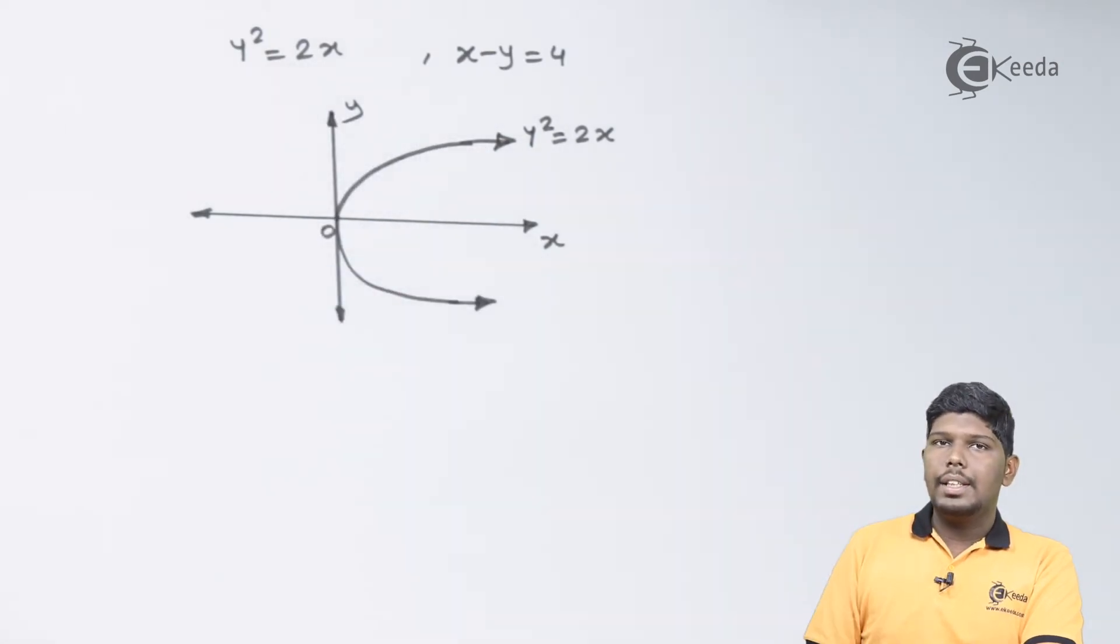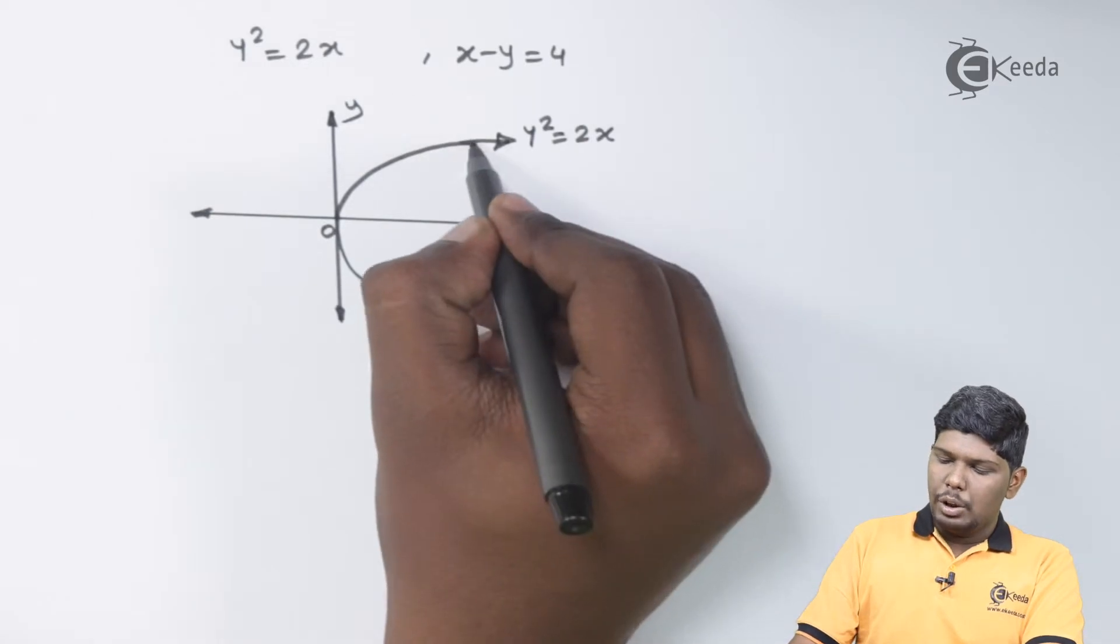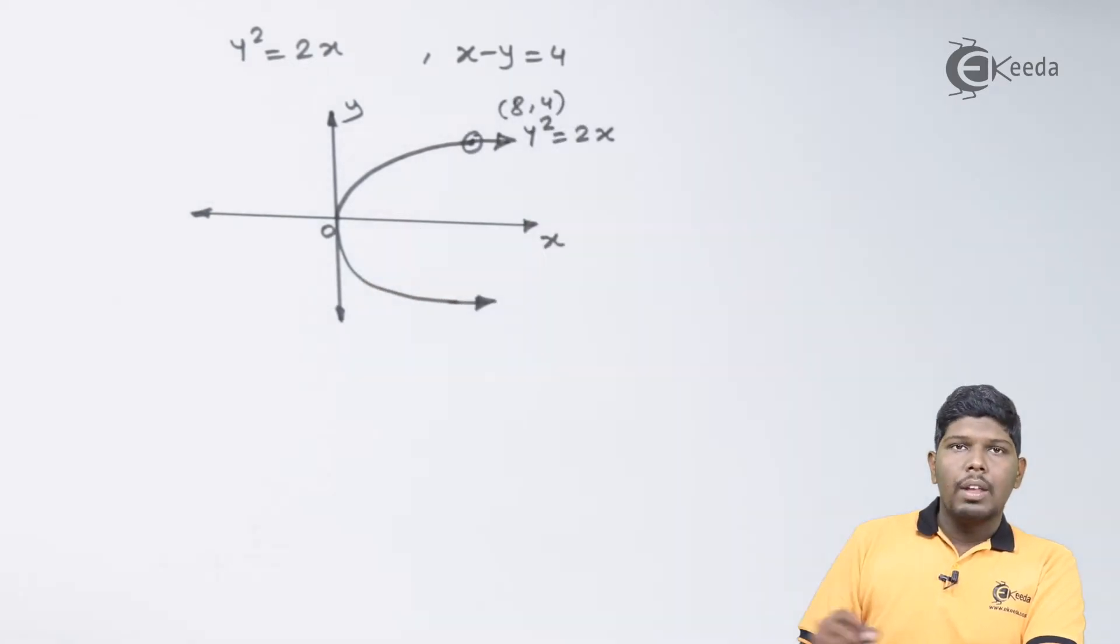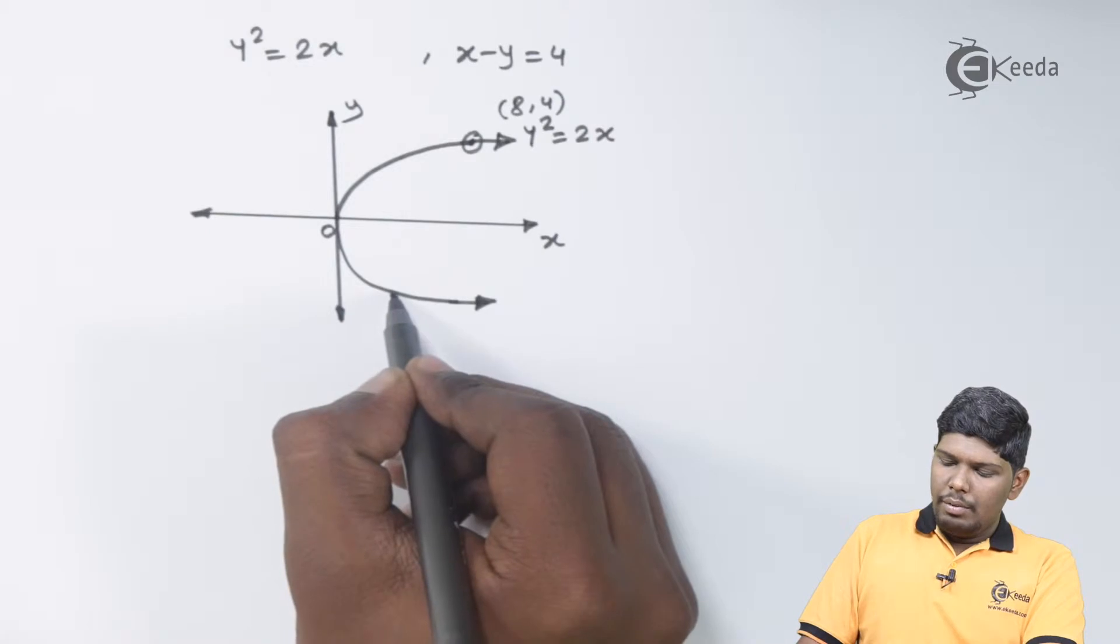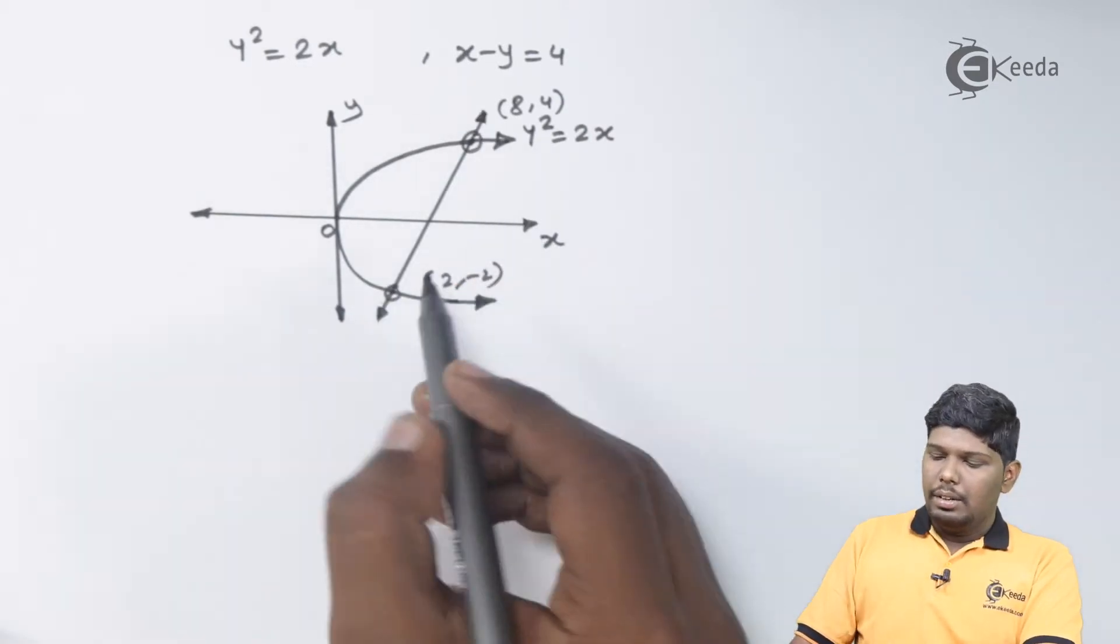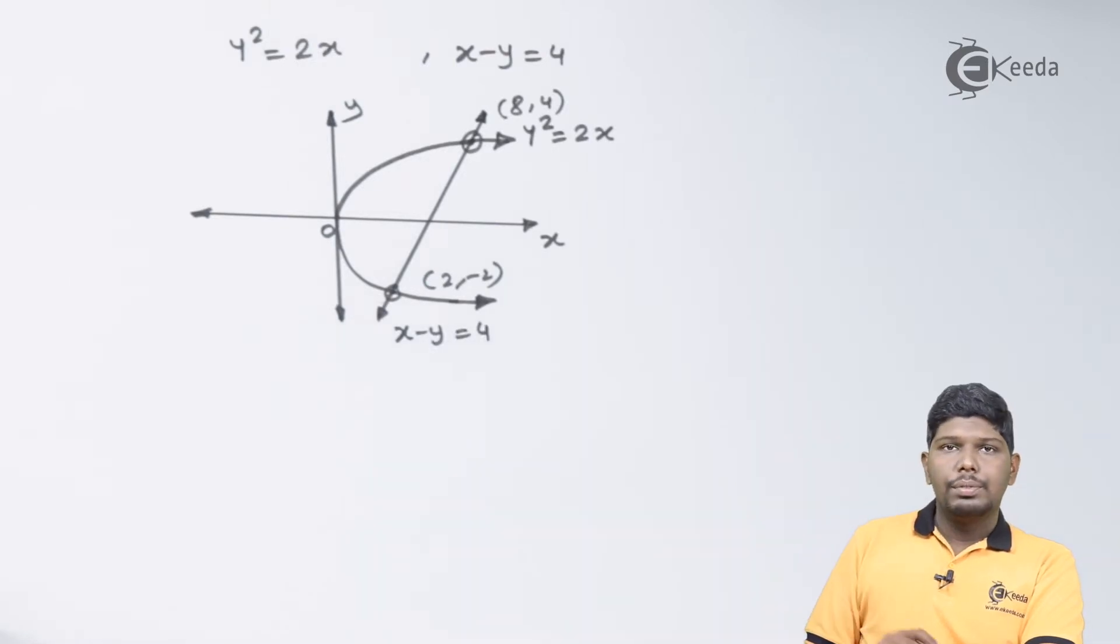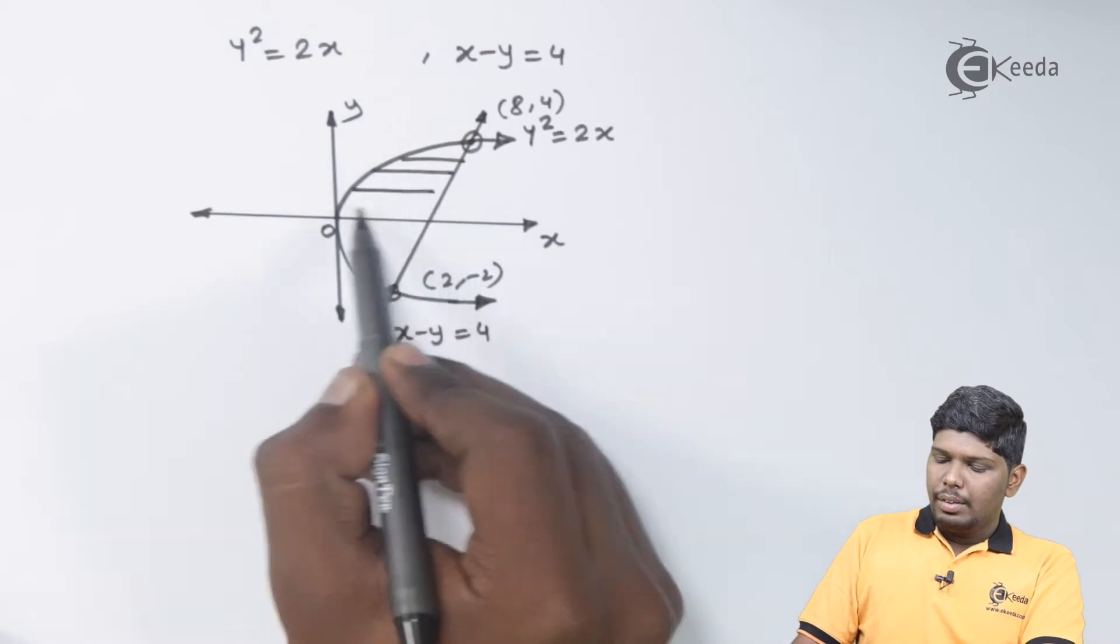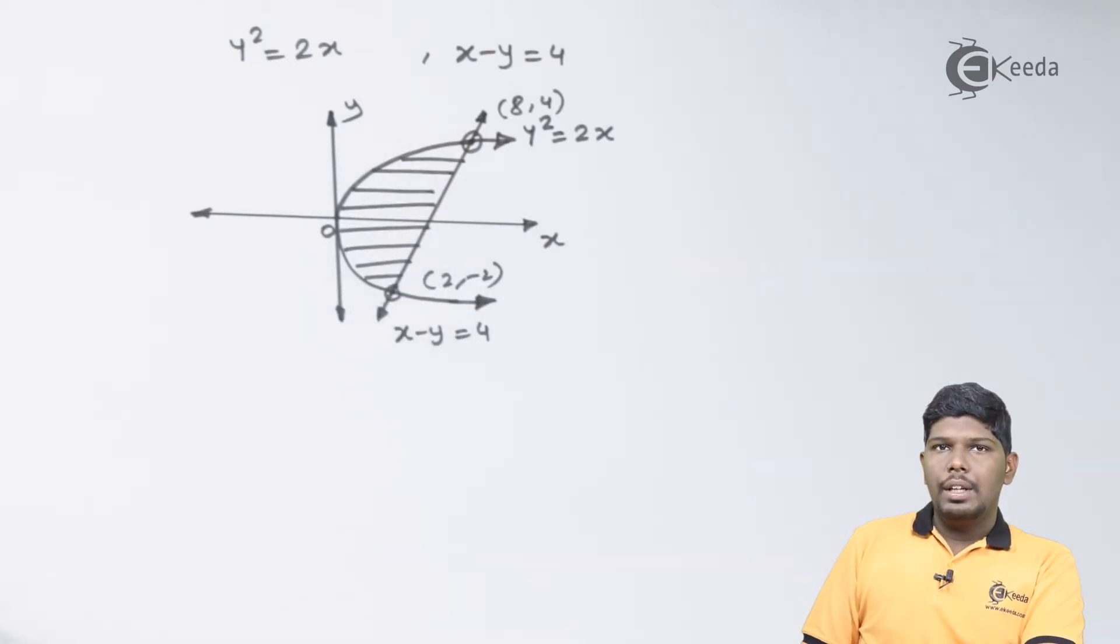Also, the parabola and the line are intersecting in two points, out of which one is (8, 4) which will lie in the first quadrant. So suppose here we have (8, 4) and the second point is (2, -2) which will lie in the fourth quadrant. So suppose here we have (2, -2). So this is our line x - y = 4.